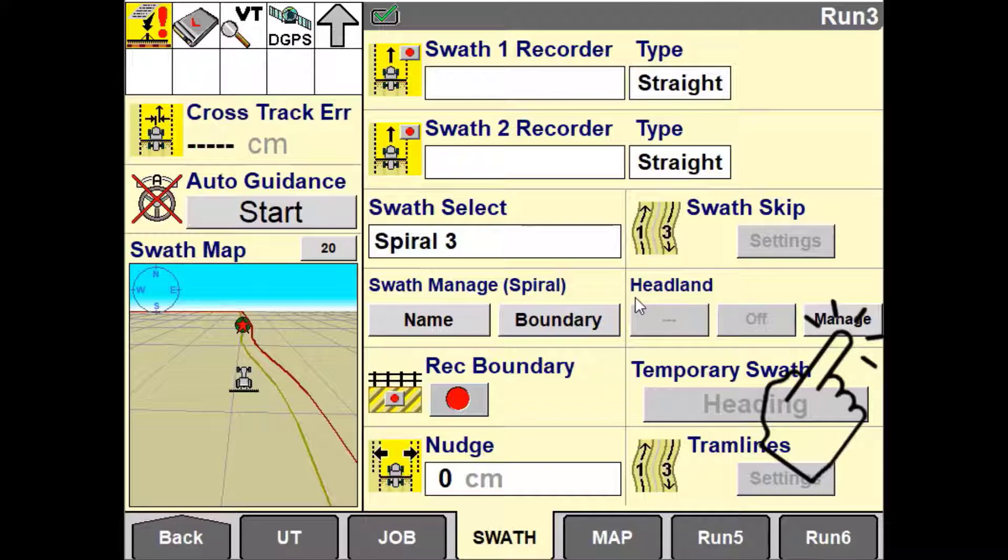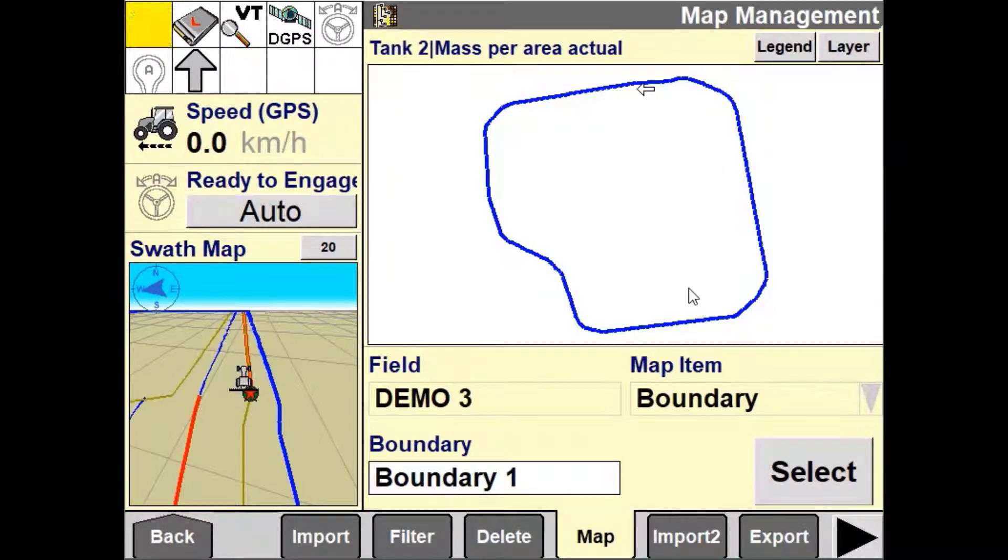The next option you will have is to define which boundary you want to create the headland for. Use the arrows left and right until the desired boundary is selected then press select.